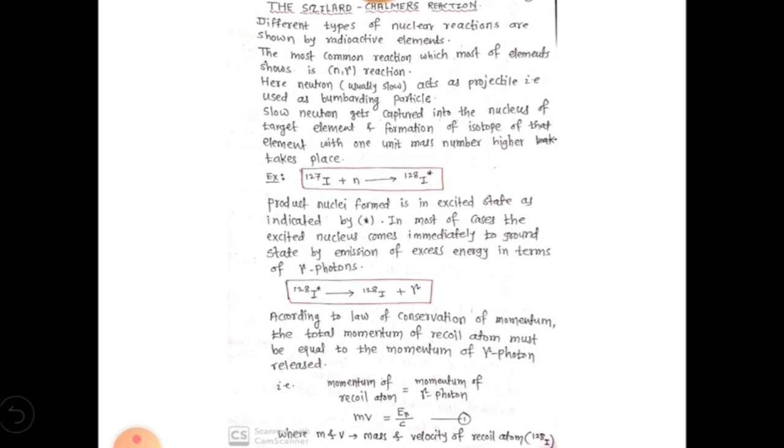The n-gamma reaction possesses a neutron which acts as a projectile—that is, the particle which we use for bombarding purposes. The target is bombarded with the help of neutrons. During this process, the condition is that the neutrons should be slow, otherwise the neutron will not get captured into the nucleus.